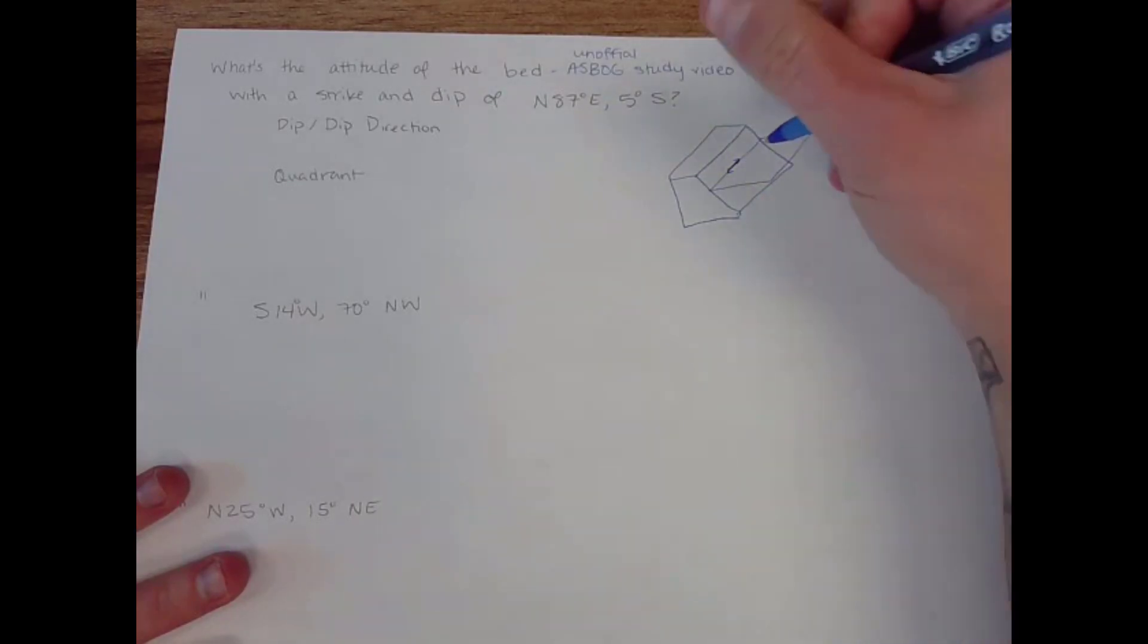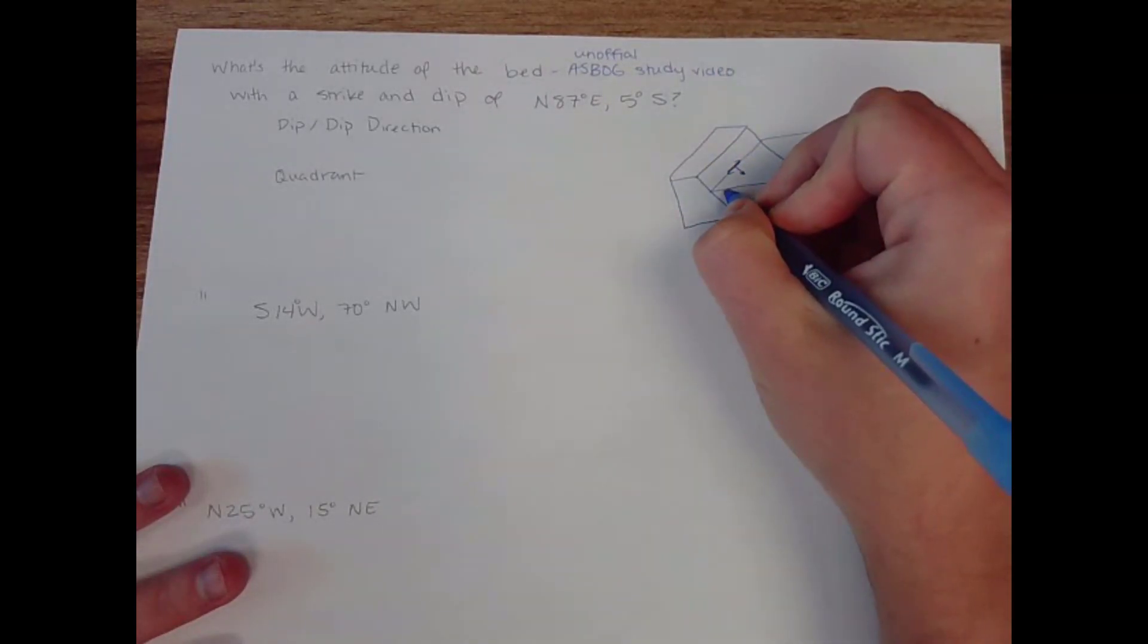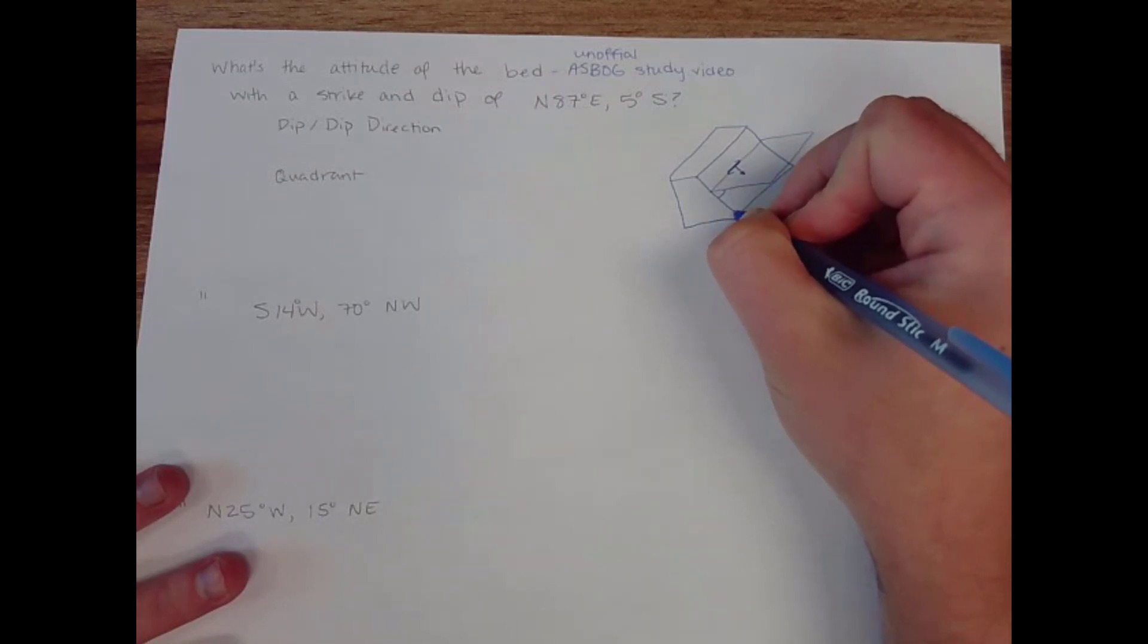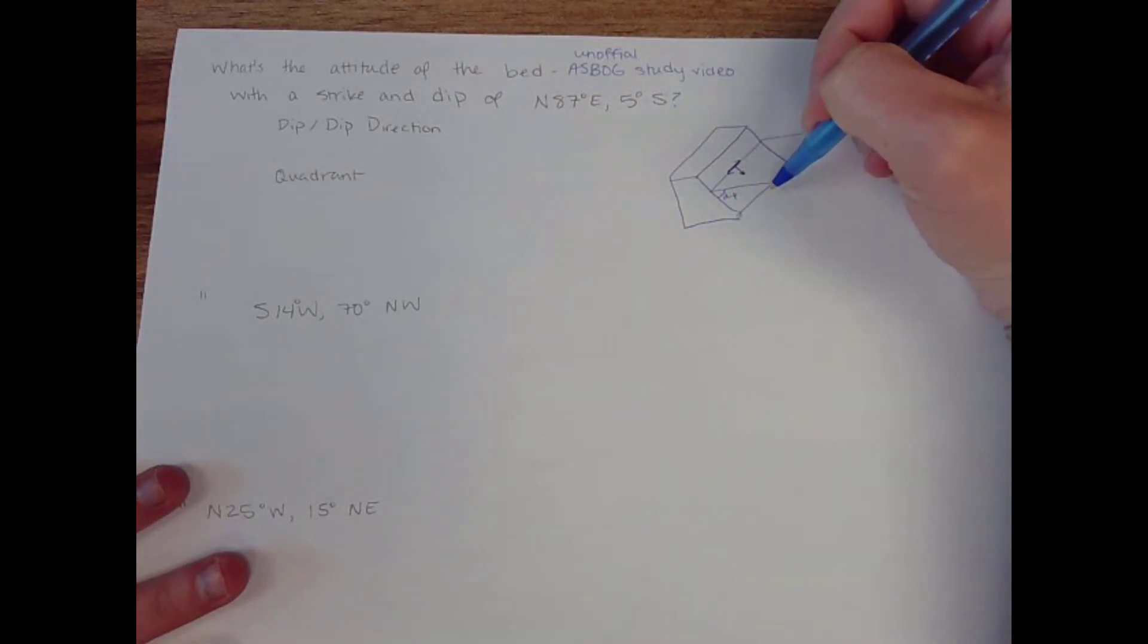And dip is perpendicular to strike and describes the downhill direction and downhill amount. So you can imagine that there's an angle between this plane and the horizontal. That's your dip. The direction that it goes downhill is the dip direction. And again, this is strike.